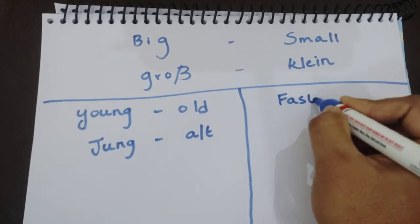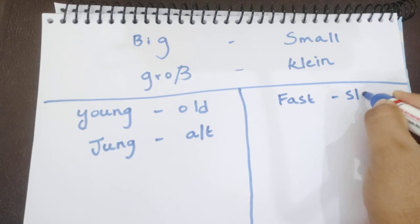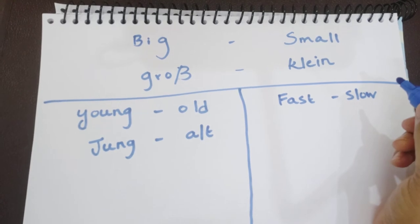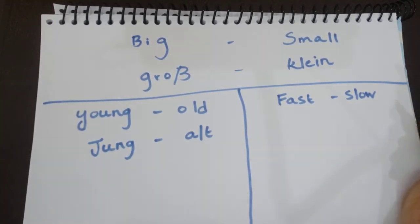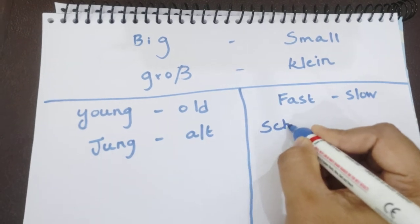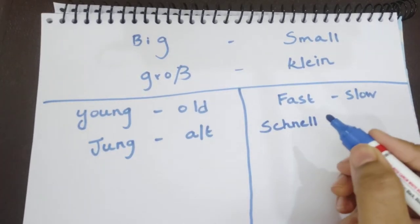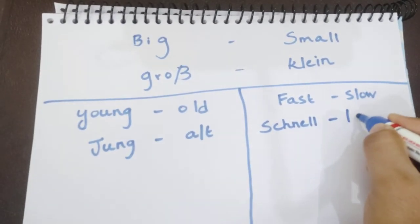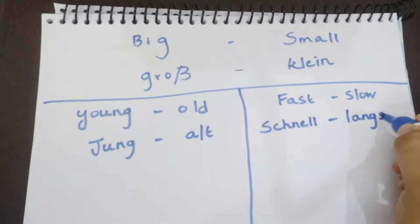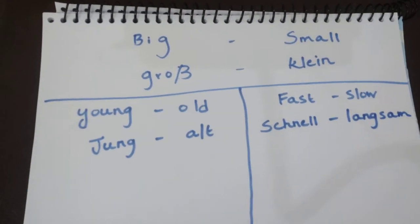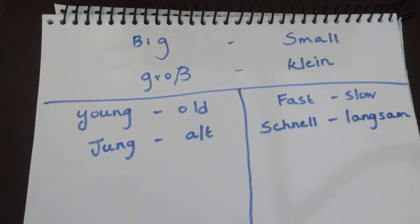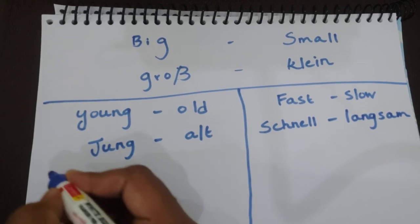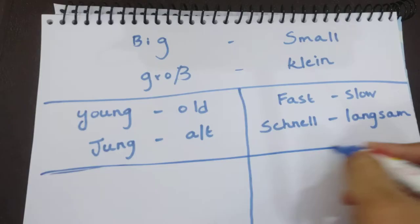And so next: fast and slow. The opposite of fast is slow. In German, fast is 'schnell' and slow is 'langsam'.